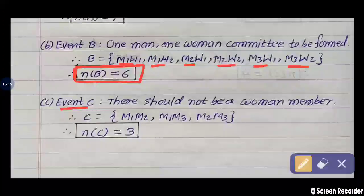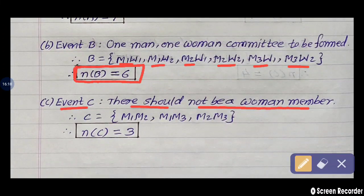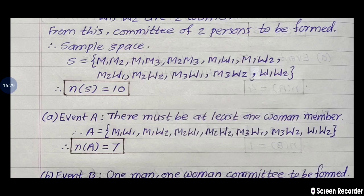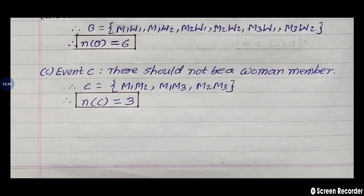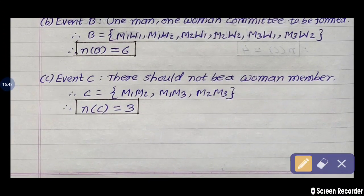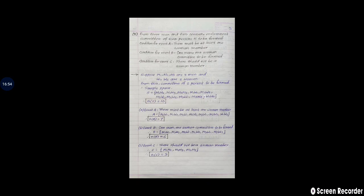Event C: there should not be a woman member, so woman is not required in the committee of two members. In the first three sample points, woman is not present. All remaining sample points have a woman. So our answer is only those three: M1-M2, M1-M3, and M2-M3. In event C, N of C is equal to 3. In this way we find the answers of the given question.